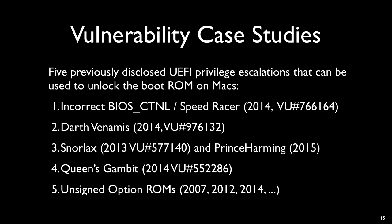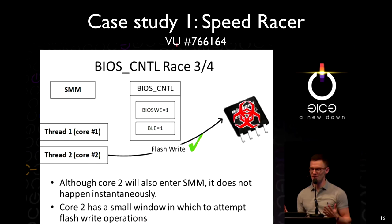The first vulnerability is called Speed Racer, presented last year here at 31C3 by Corey Kallenberg. It is a hardware race condition that, in a multi-core CPU, allows a second core to get write access to the BIOS. The reason goes back to legacy hardware: the Intel interface control hub was designed for a single-threaded system. There's the BIOS write enable bit that prevents accidental writes to the firmware unless you're in ring zero, and the BIOS lock enable bit that allows SMM to arbitrate writes to the BIOS write enable bit.